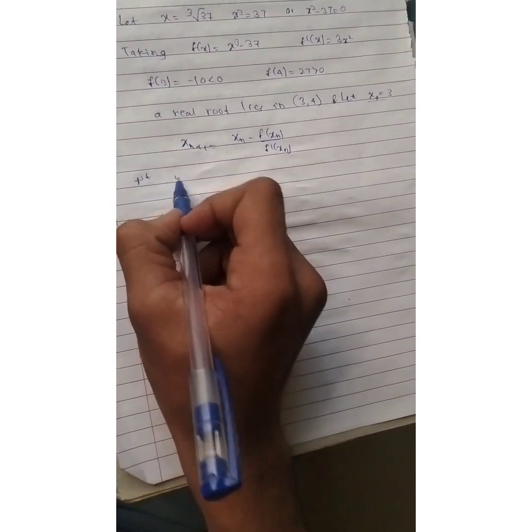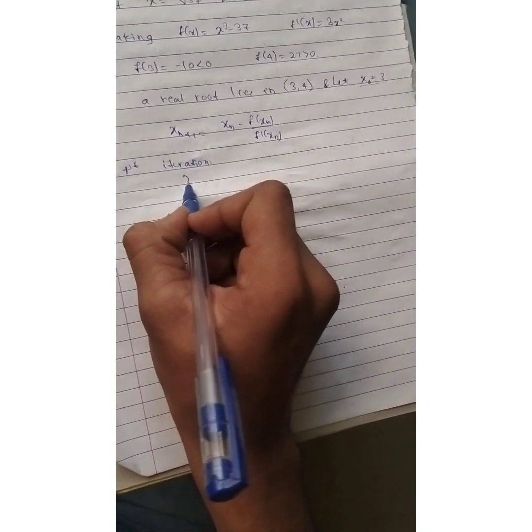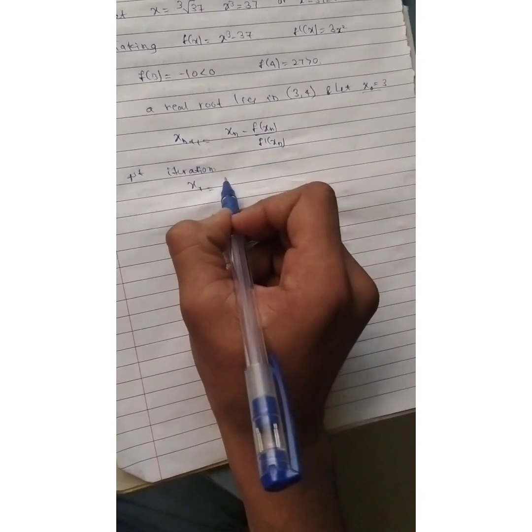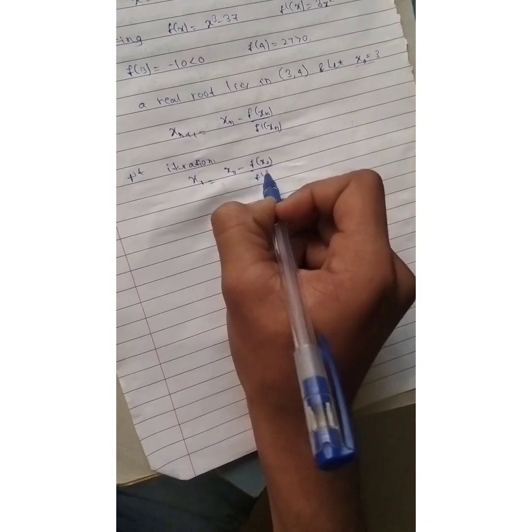Now, first iteration. We shall find the first iteration, that is x1 is equal to x0 minus f of x0 divided by f dash of x0.